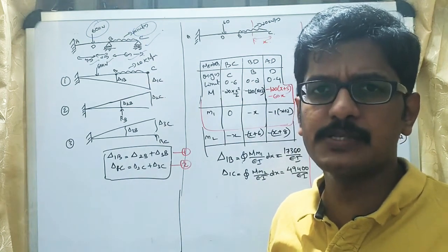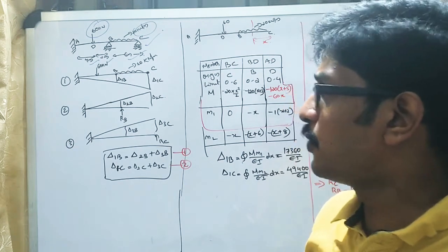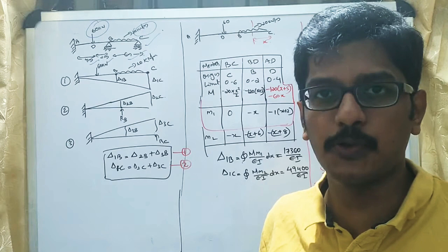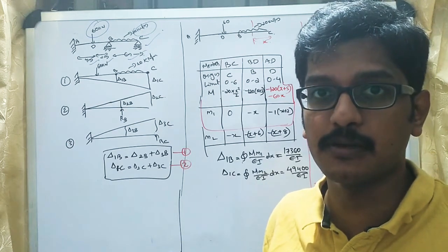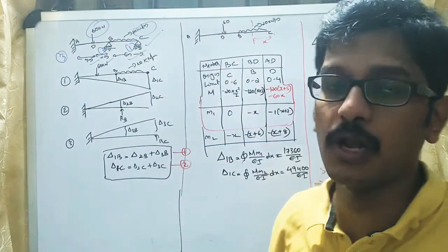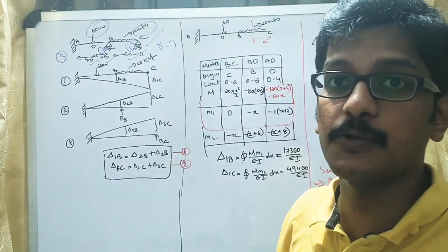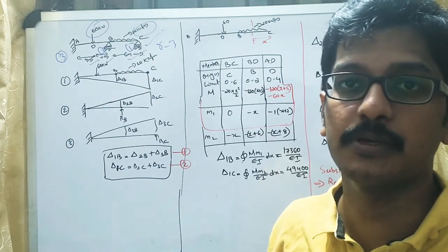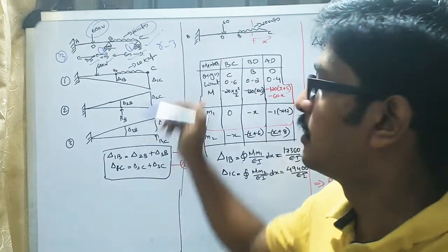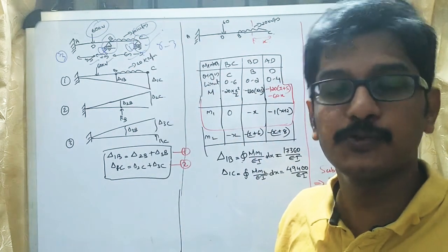There are many steps here. Our first step is to calculate how many redundant numbers are present. In this case, there are three reactions at the fixed end and one each at the rollers, giving a total of five reactions. Using the equation R minus 3: five minus three equals two, so there are two redundant numbers. Next, we identify which members to remove. We will remove the supports at B and C, making it a cantilever beam, which is easy to analyze.